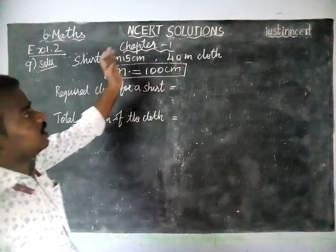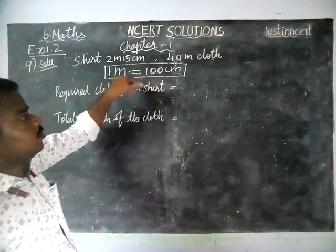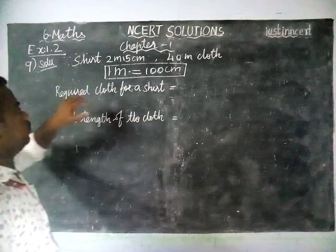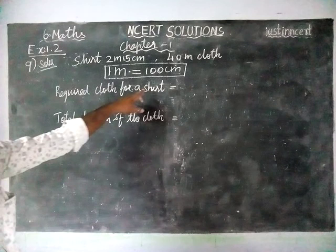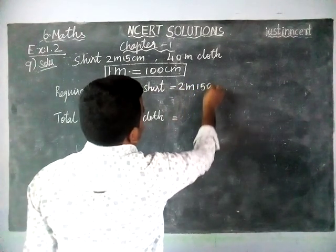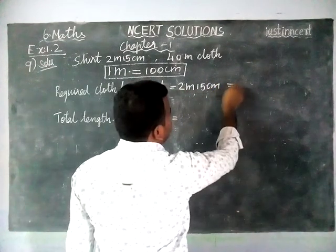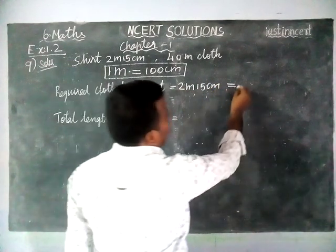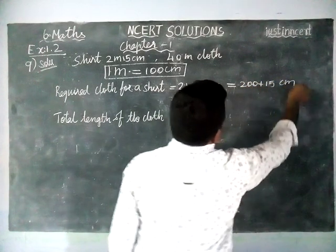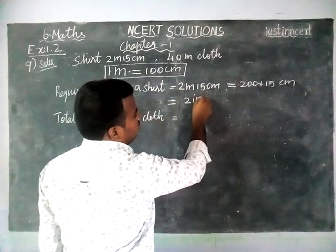So firstly, we have to convert into the same unit. We are going to convert meter into centimeter. 1 meter is equal to 100 centimeter. The required cloth for a shirt is equal to 2 meter 15 centimeter. So, 2 into 100 is equal to 200. 200 plus 15 centimeter is equal to 215 centimeter.